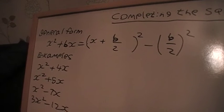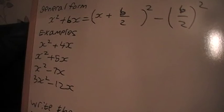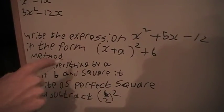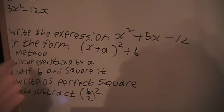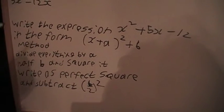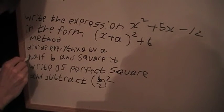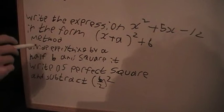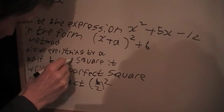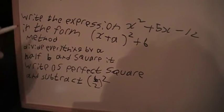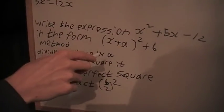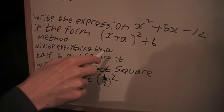So to get the idea, let's look at a few examples here. This is one method: if we've got a constant in front of the x squared term, we're going to divide everything by that. And then if we haven't got a constant in front of the x squared term, we're just going to half b, which is this term here multiplying the x, and square it.